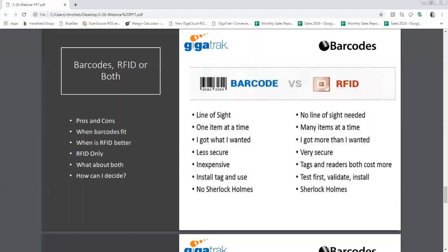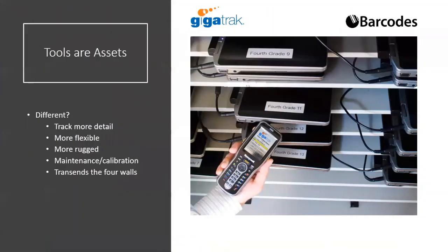Barcodes are normally less secure than an RFID tag — I can take a barcode and photocopy it, but I can't do that with an RFID tag. Also, barcodes are less expensive. You can normally print your own asset tags. An industrial barcode tag that goes on a tool might cost somewhere between 25 cents and 50 cents, depending on size and quantity.